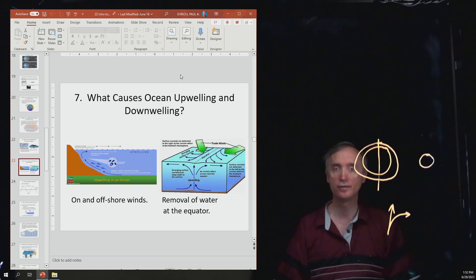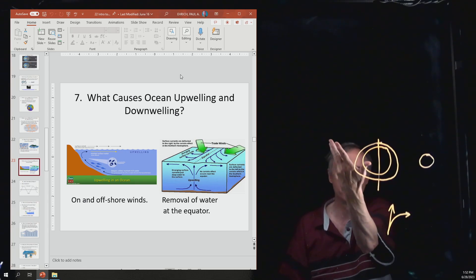Okay, you should also have, this is a definition type thing. What do we mean by ocean upwelling, and what do we mean by ocean downwelling? And you should know what causes it, and then you should also know what's the consequence of it. So when water is upwelled, it can bring nutrients with it, and then those nutrients can feed fish.